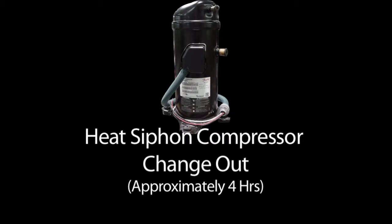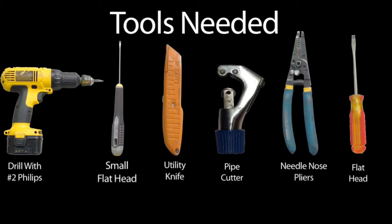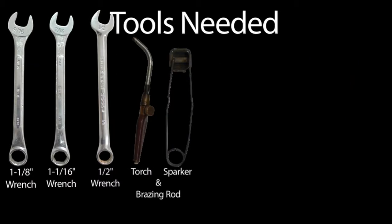Heat Siphon Compressor Changeout. You'll need a Phillips head, a small flat head, and a regular flat head screwdriver, a utility knife, a pipe cutter, needle nose pliers, a 1 1⁄8 wrench, a 1 1⁄16 wrench, a 1⁄2 inch wrench, and equipment for brazing.